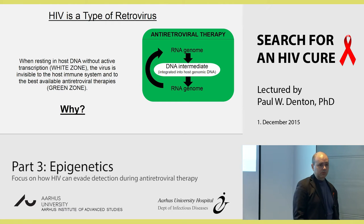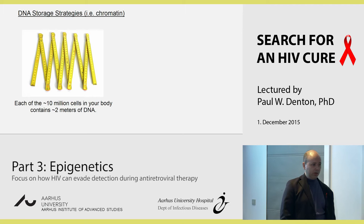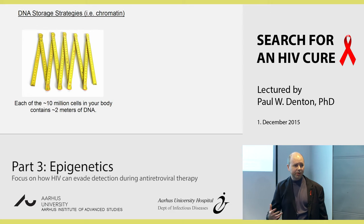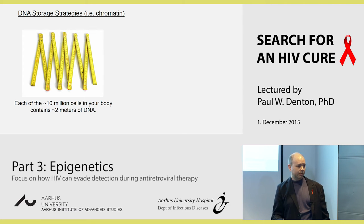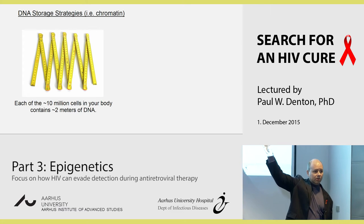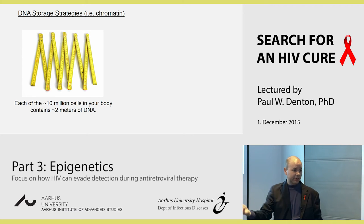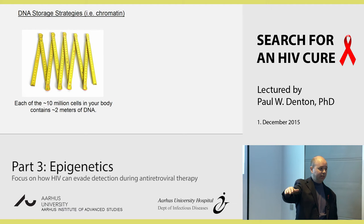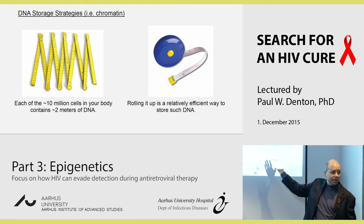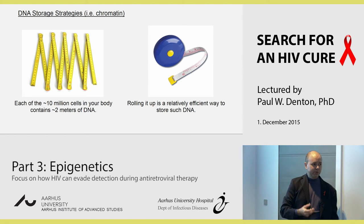But why is this? It has to do with DNA storage strategies. Depending on what you read, our body has between 10 and 100 million cells, and each of those cells has about 2 meters of DNA. If you stretched it all out end to end, it's supposedly enough to go to the sun and back a few times. Storing it in a clunky fashion just wouldn't work, so much like we've come up with better strategies for storing tape measures, our bodies have come up with better strategies for storing DNA.